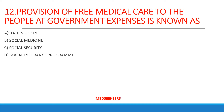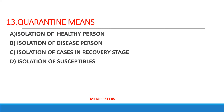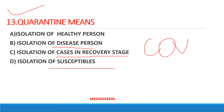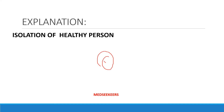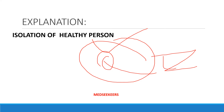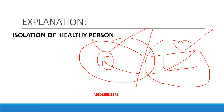Provision of free medical care to people at government expenses is known as — option A: state medicine; option B: social medicine; option C: social security; option D: social insurance program. Your answer is state medicine. Next: quarantine means — option A: isolation of healthy persons; option B: isolation of a deceased person; option C: isolation of cases in recovery stage; option D: isolation of susceptibles. There is a difference: quarantine is for healthy persons, isolation is for sick persons.